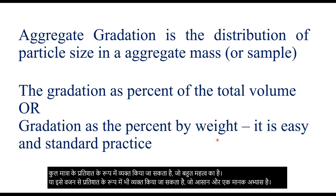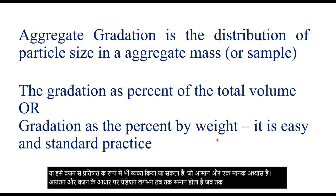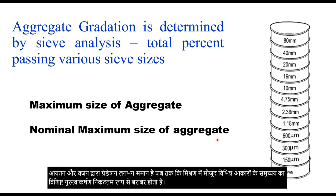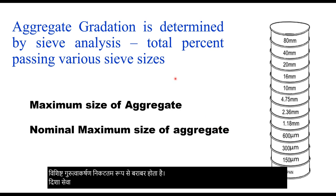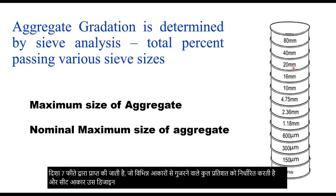Gradation by volume and weight is approximately the same as long as the specific gravities of aggregates of various sizes present in the mix are approximately equal. Gradation is obtained by sieve analysis by determining the total percent passing various sieve sizes, and sieve sizes can be as per the design of the mix or thickness of the layer.